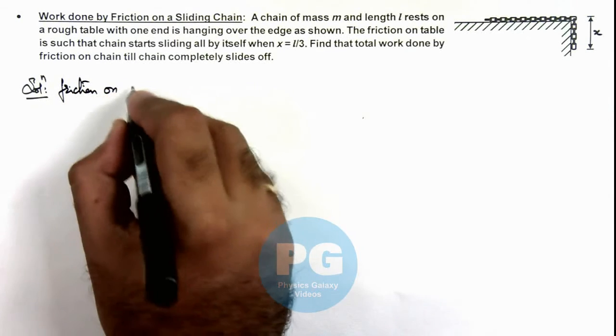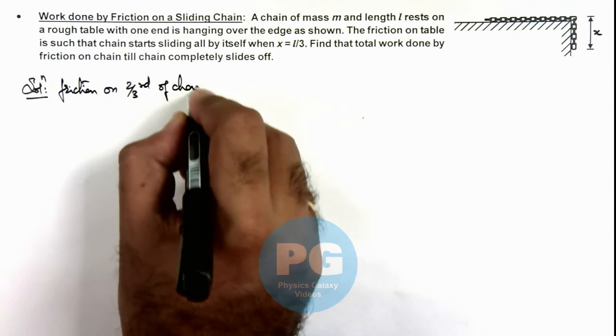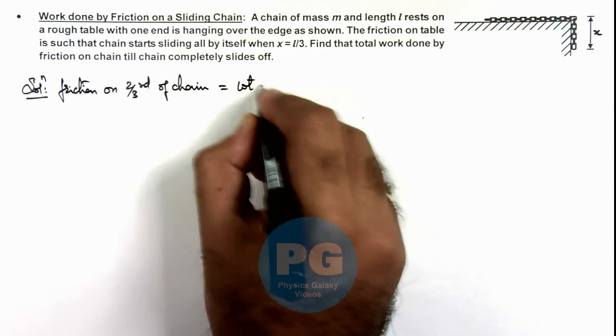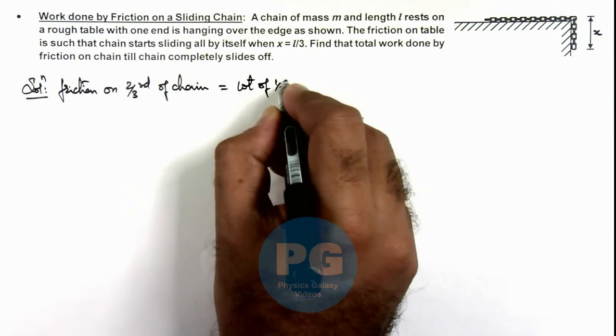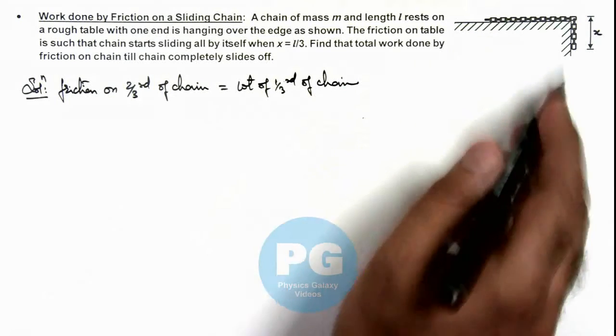Friction on two thirds of chain is equal to weight of one third of chain. Then only it'll slide off automatically by itself.